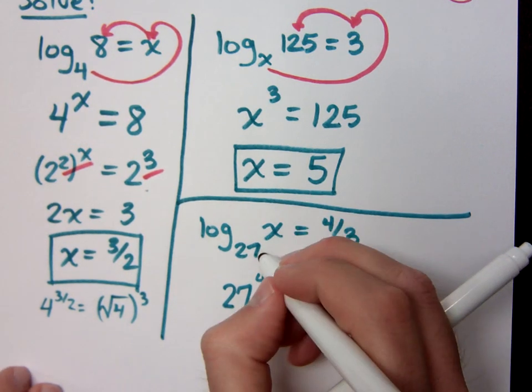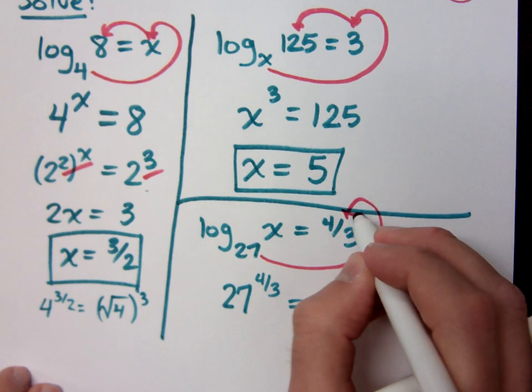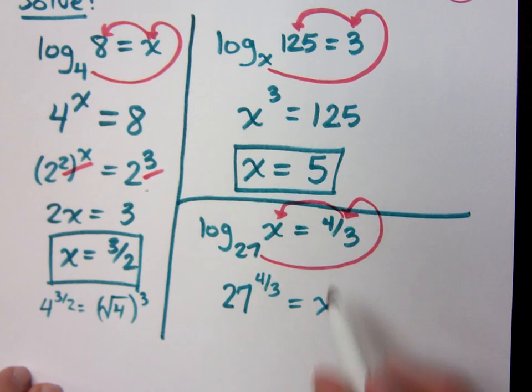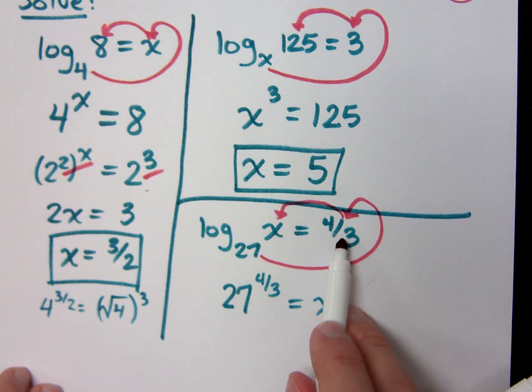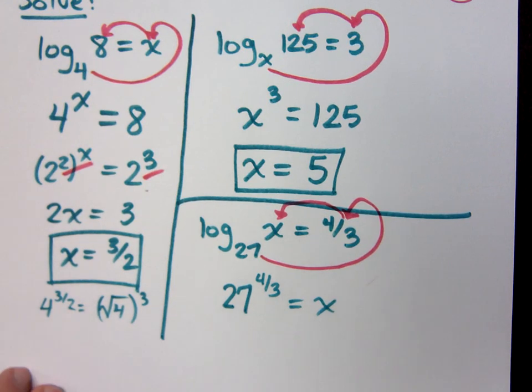27 to that power equals x. Can you work this guy out? As Doug was saying, that's the cube root of 27 raised to the 4th power equals x.